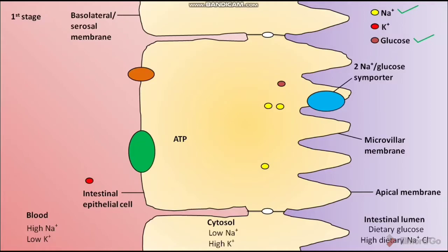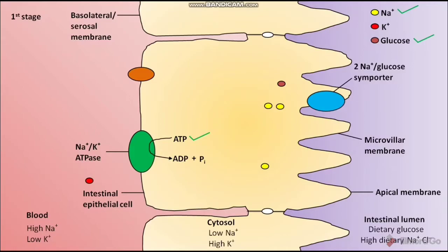The basolateral or serosal membrane faces towards the blood. It has Na+/K+ ATPase, which is found exclusively in the basolateral or serosal membrane. In the presence of Na+/K+ ATPase, the cytosolic ATP is converted into ADP and Pi. After this conversion, the cytosolic Na+ ions that were symported via the 2 Na+/glucose symporter are transported through Na+/K+ ATPase and reach the blood.